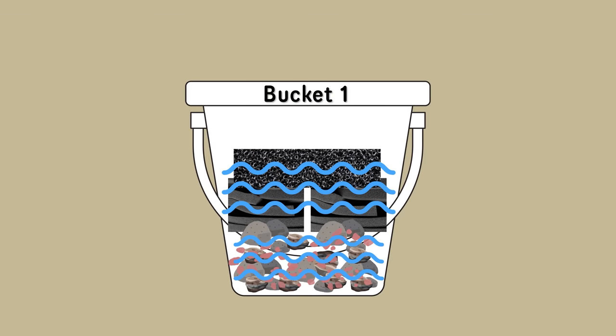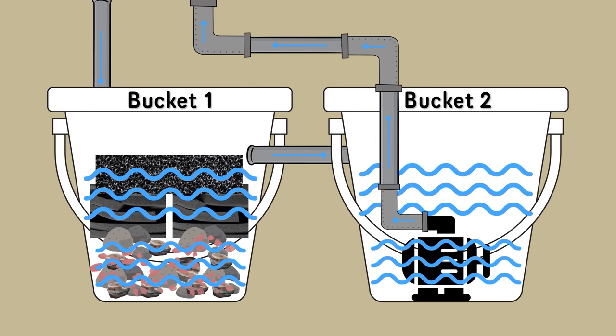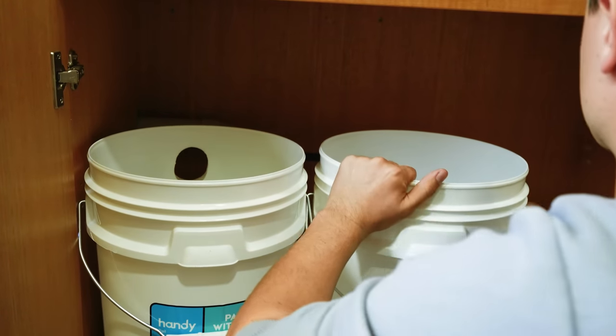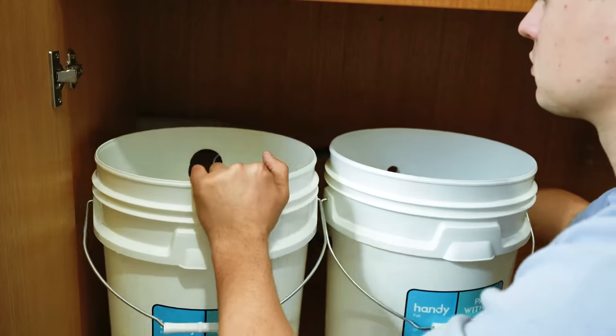One for filter material and then it's going to overflow into the second bucket that's going to have the pump in it. I could have just done this all in one bucket but I used two because it was going to increase the water volume of the whole entire betta system and it just makes it really really easy to clean.